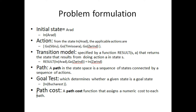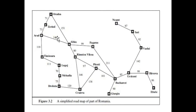Finally, we study path cost. Path cost is a function that assigns a numerical cost to each path. In this problem, calculating path cost is straightforward because we have the distance between each pair of cities. We simply sum the distances between the cities along our chosen path.